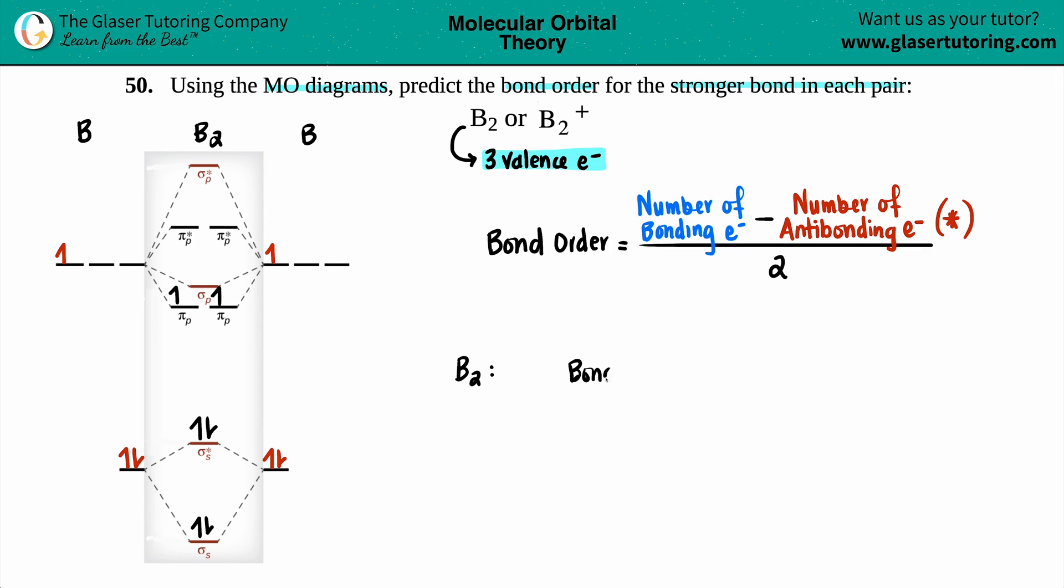So the bond order for B2 would be something minus something divided by two. I have two antibonding electrons here because I see that star, and the other ones - one, two, three, four - the ones that don't have a star, that's your bonding. Four minus two is two, two divided by two equals one. So my bond order for B2 is one, which means it would form a single bond.